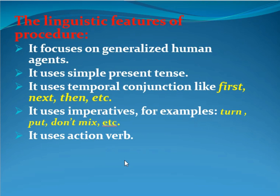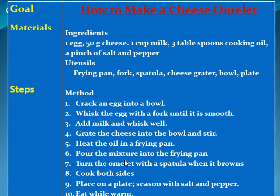Now let's look at the example: how to make a cheese omelette. Bagaimana kita membuat cheese omelette. Ini adalah goalnya — ini yang akan kita buat. Kemudian masuk ke materials, di sini bahan-bahan yang diperlukan — ingredients.